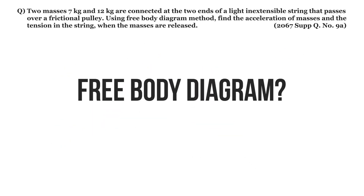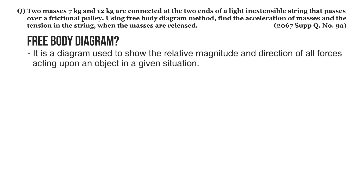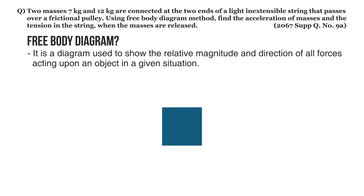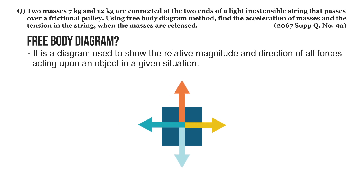Do you know what a free body diagram is? It is a diagram used to show the relative magnitude and direction of all forces acting upon an object in a given situation. In a free body diagram, an object is generally represented by a box, whereas a force is represented by an arrow from the center of the box, outward in the direction that the force is acting. For example, this free body diagram depicts four forces acting upon the object.